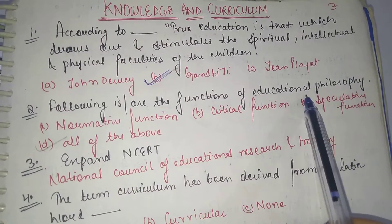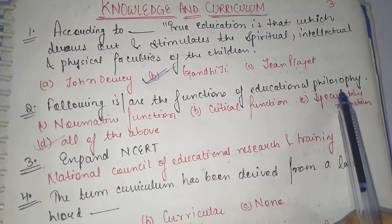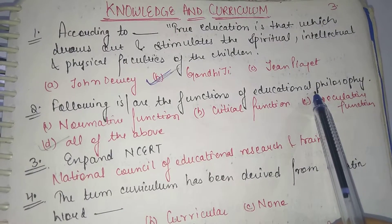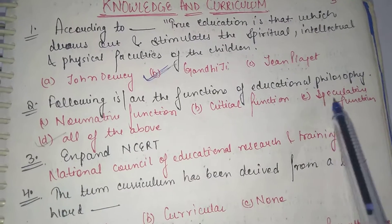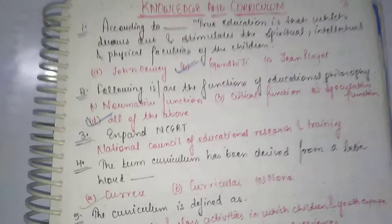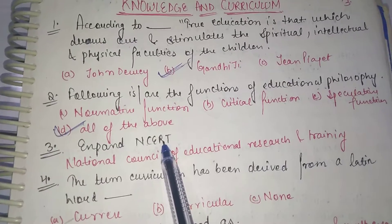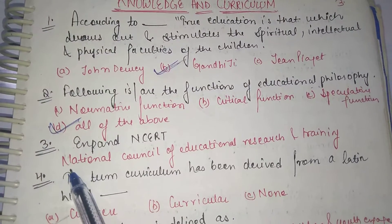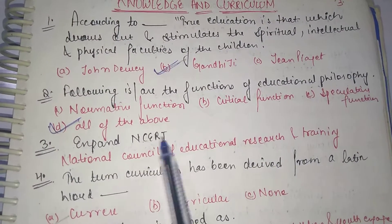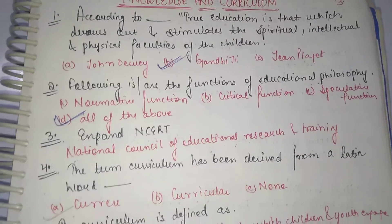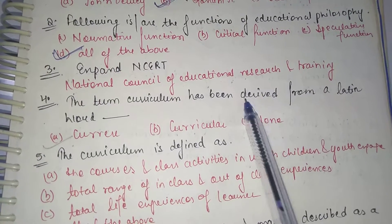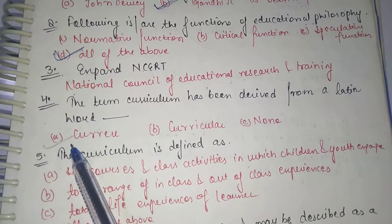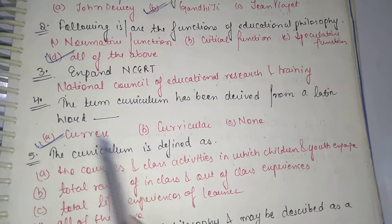Second question is: What are the functions of educational philosophy? Options are normative function, critical function, speculating function. The answer is all of the above. Third question: Expand NCRT. NCRT is National Council of Educational Research and Training. The next question is: The term curriculum has been derived from a Latin word, that is curate.